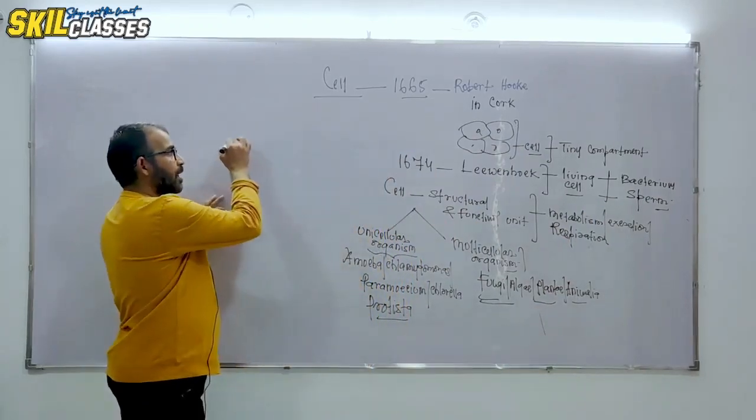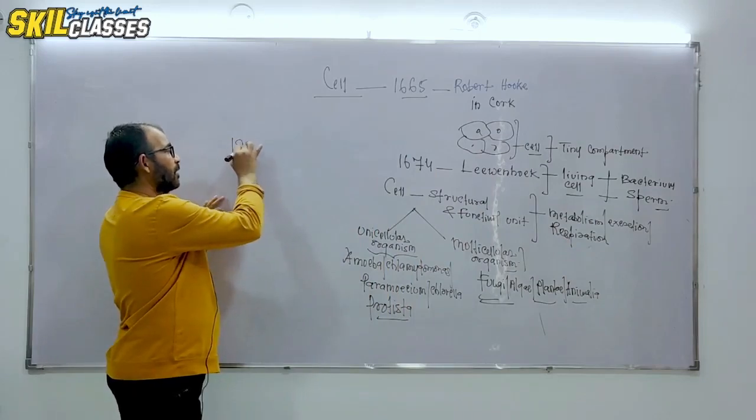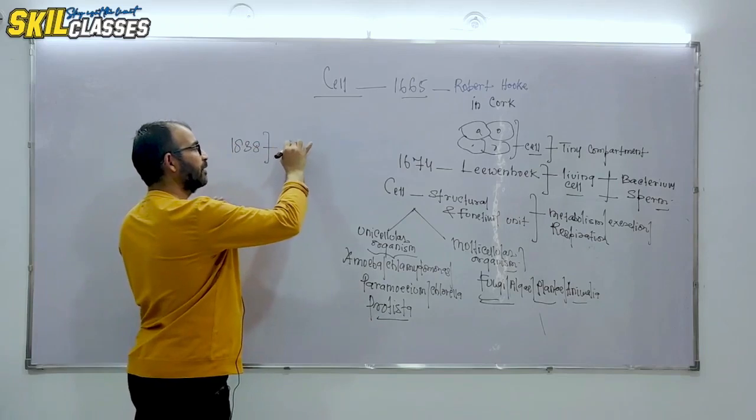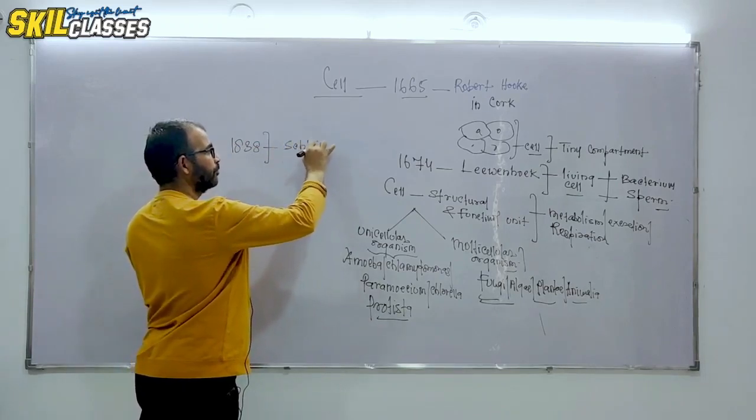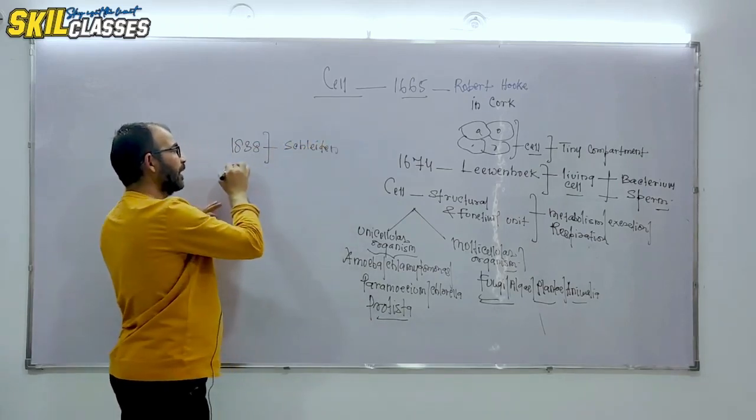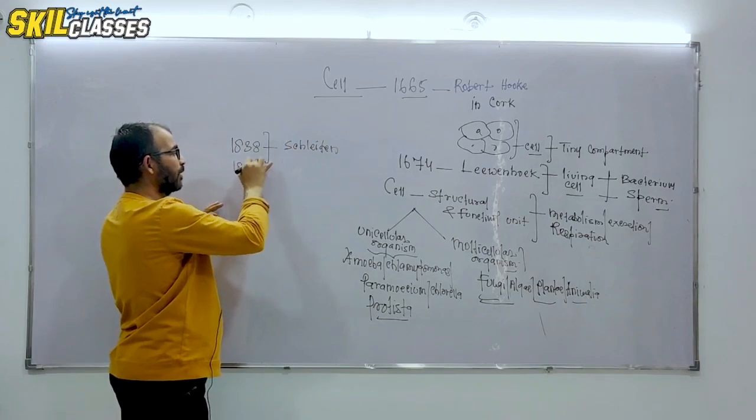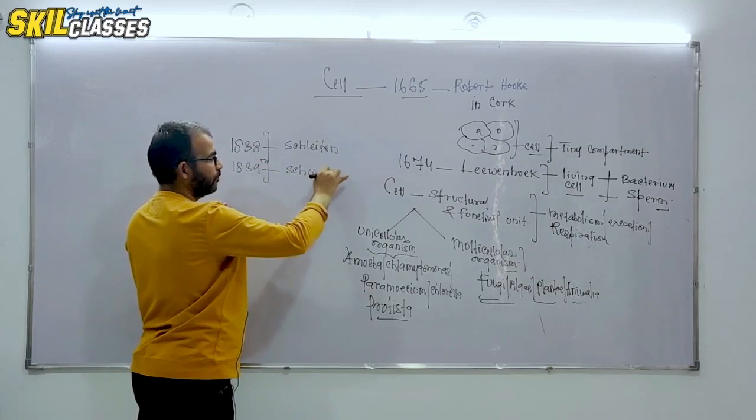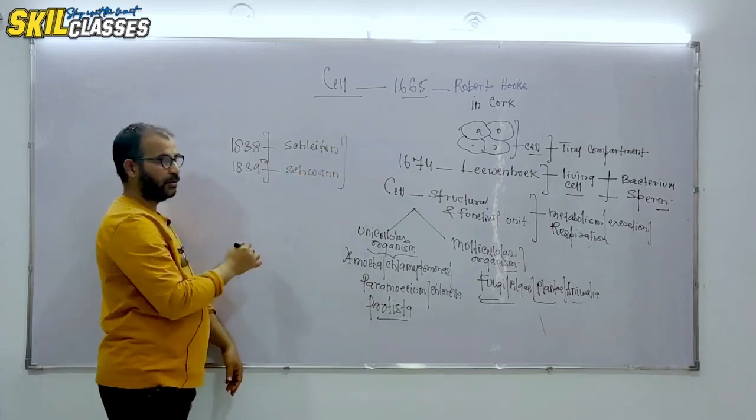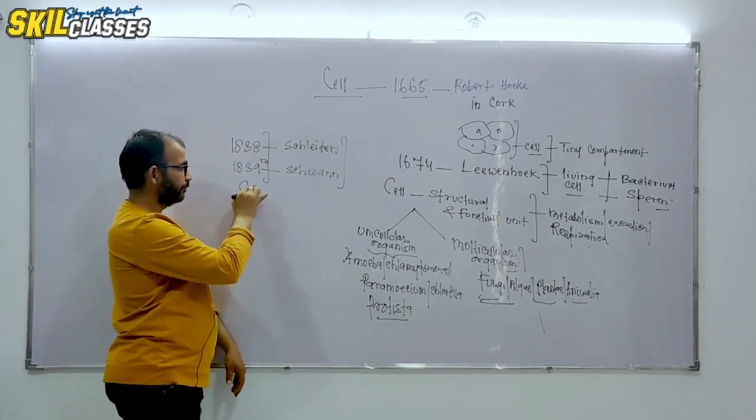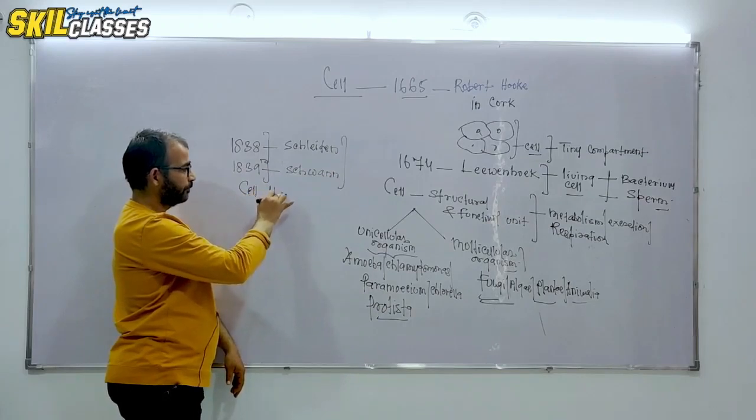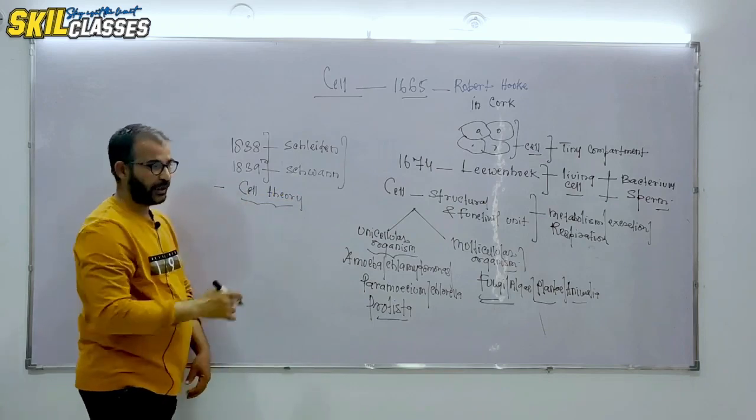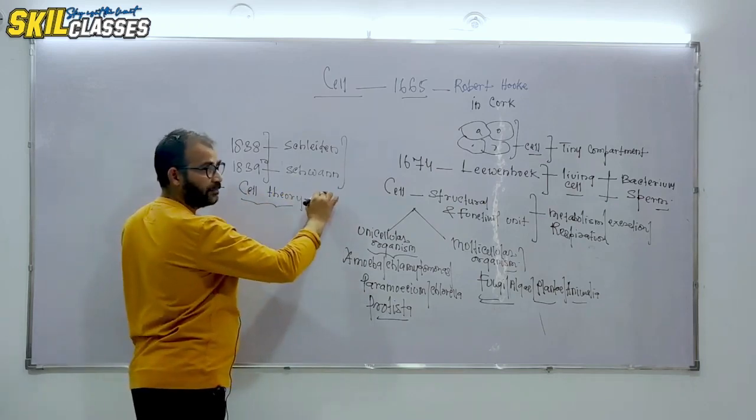In 1838, German scientist Schleiden, and then in 1839, Schwann, they gave a theory called cell theory.